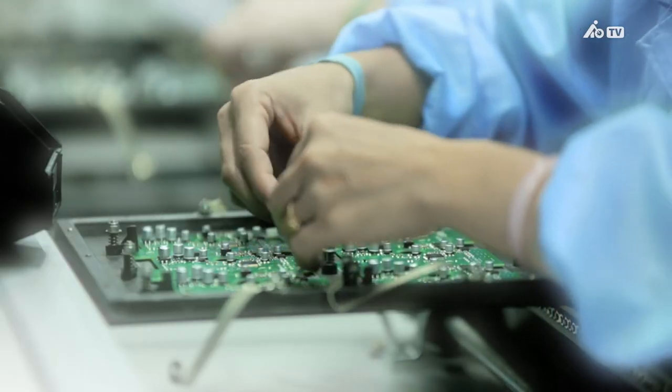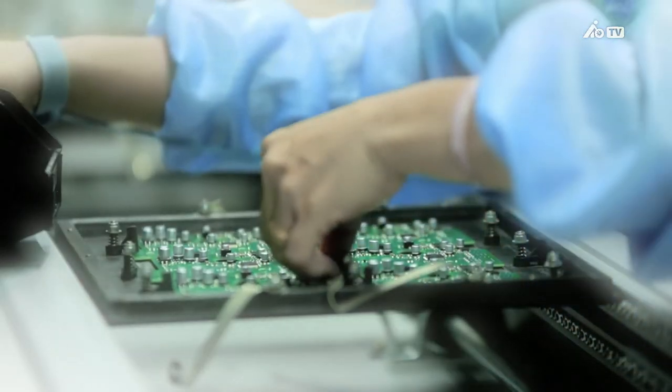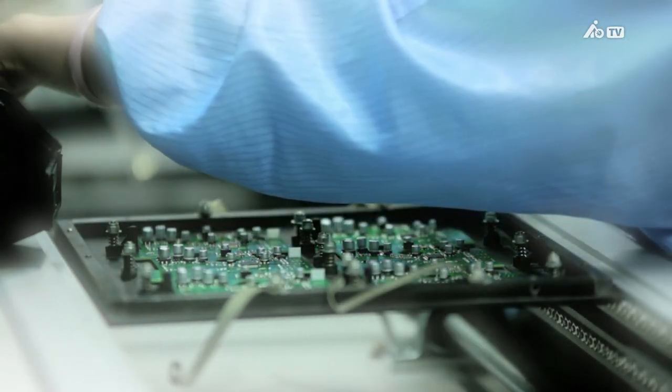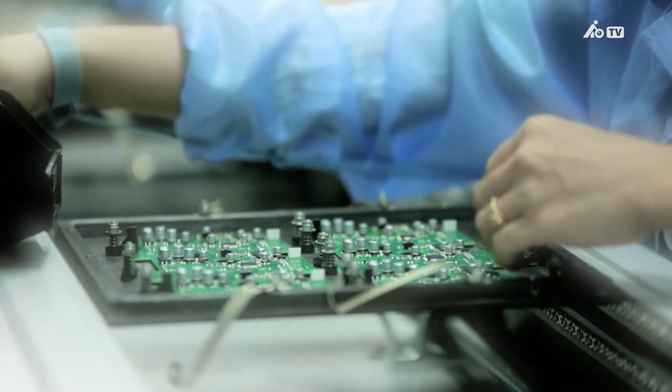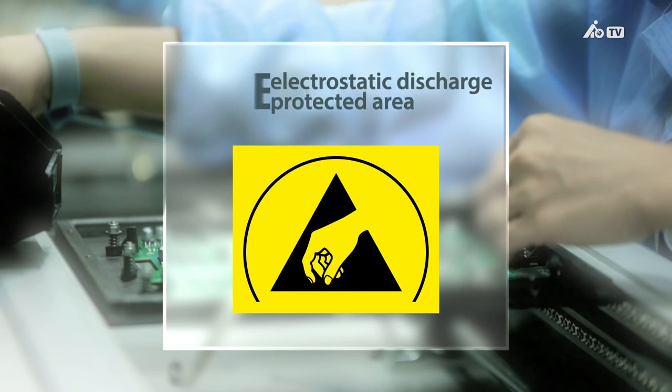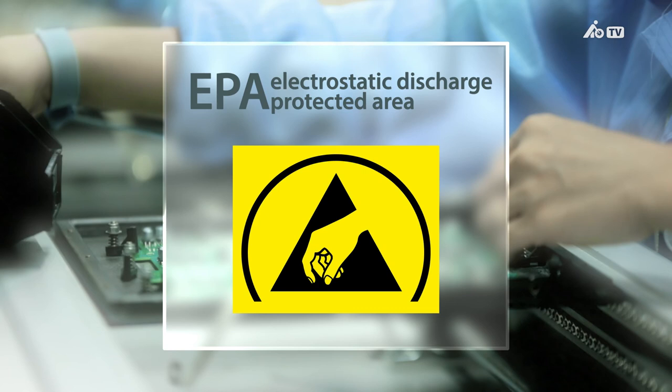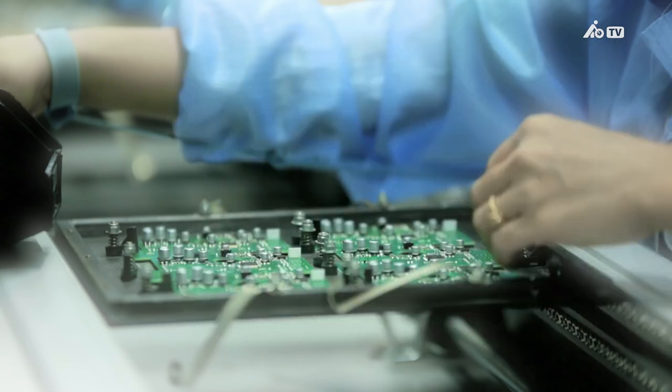Spaces that are free of ESD provide effective protection against damage caused by electrostatic discharge. Within these Electrostatic Discharge Protected Areas, or EPAs, all necessary precautionary measures are taken to ensure that work can be carried out with electrostatic sensitive devices without the risk of damaging them.